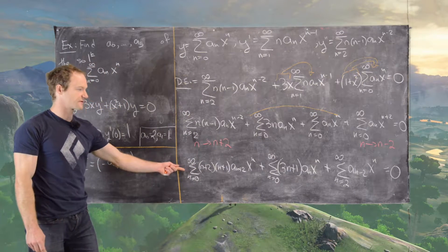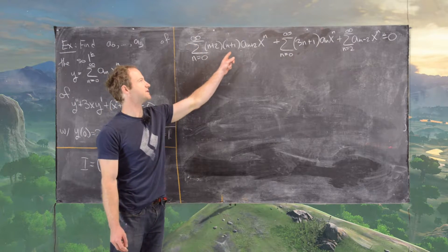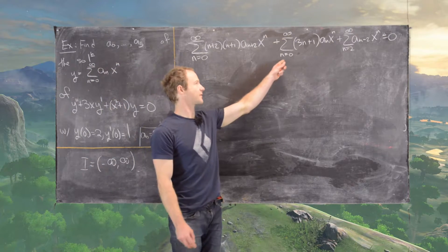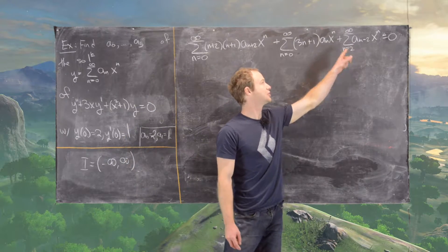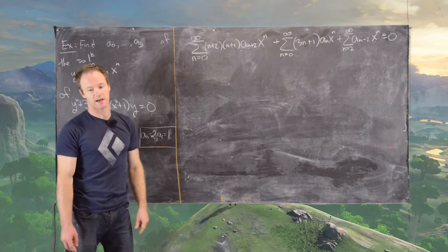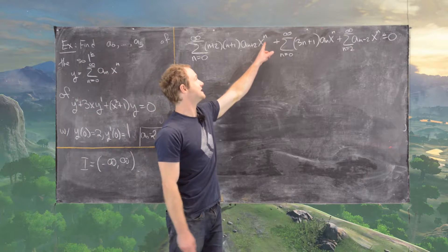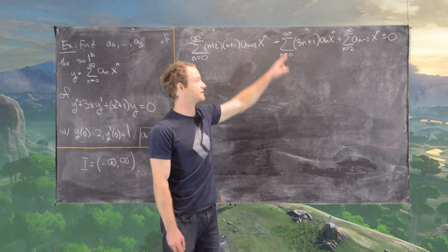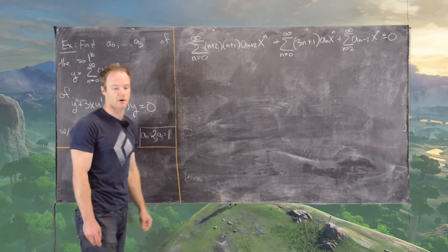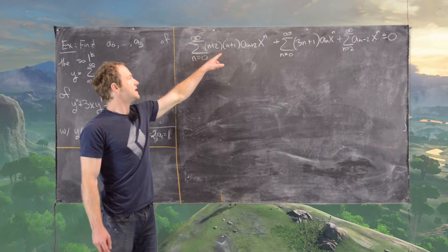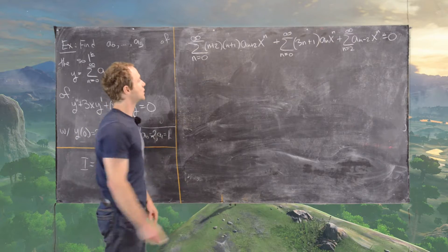So we have: the sum from n=0 to infinity of (n+2)(n+1)·a_(n+2)·x^n, plus the sum from n=0 to infinity of (3n+1)·a_n·x^n, plus the sum from n=2 to infinity of a_(n−2)·x^n, all equal to 0. The issue is that the first two sums start at n=0 while the last starts at n=2. We can fix this by picking out the first two terms from each of those sums, then starting them at n=2.